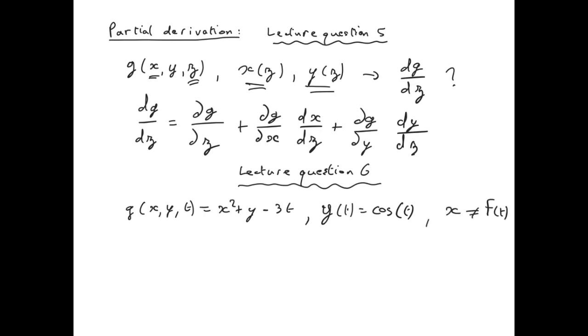So if we just apply what we did in lecture question 5 but replacing z by t, we can directly express dg over dt.